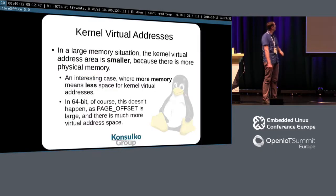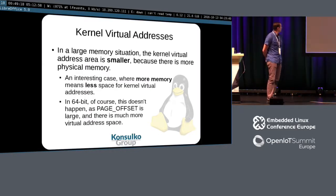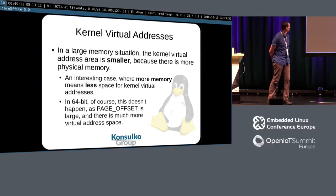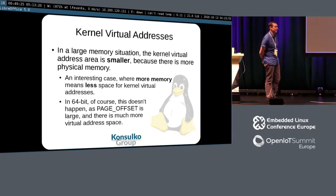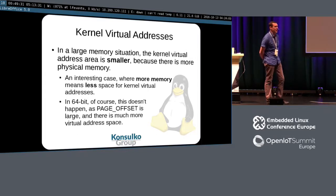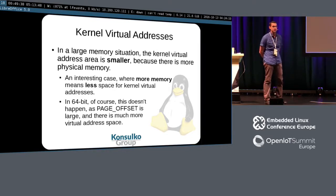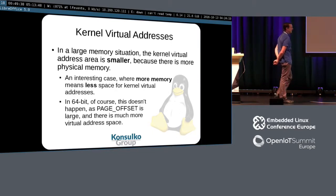On the 32-bit machine, we have a very constrained space in the logical address space if we have, say, 768 MB of RAM. There's less space for kernel virtual addresses. Those are tunable, and you just don't deal with this problem on a 64-bit system.